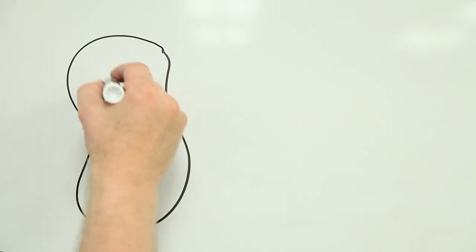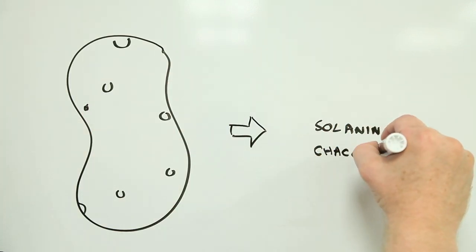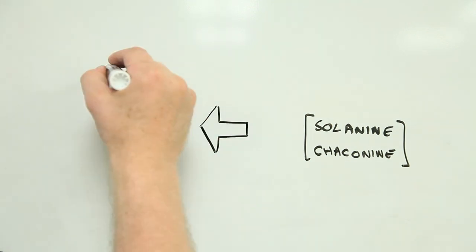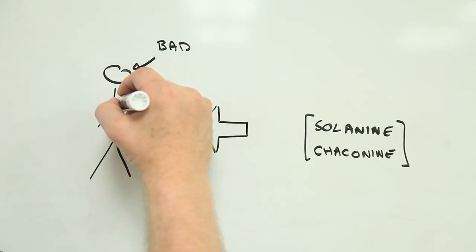Potatoes contain the TGAs solanine and chaconine. The bad news is that these are neurotoxins and have also been known to cause cardiac and gastrointestinal disorders. The good news, though, is that potatoes typically don't contain enough of the compounds to be anywhere near harmful.